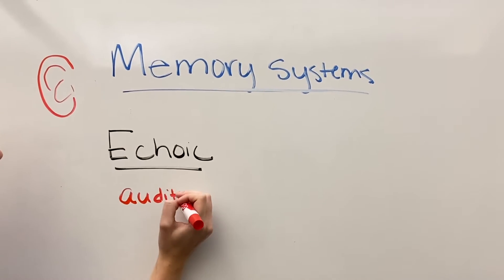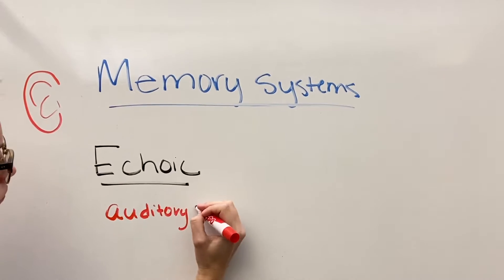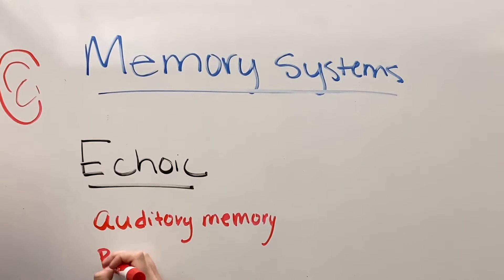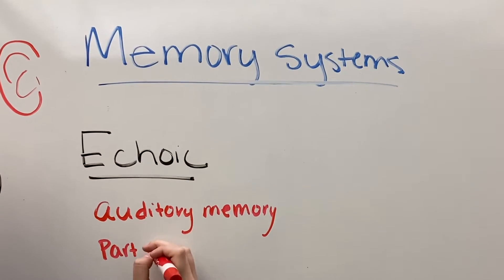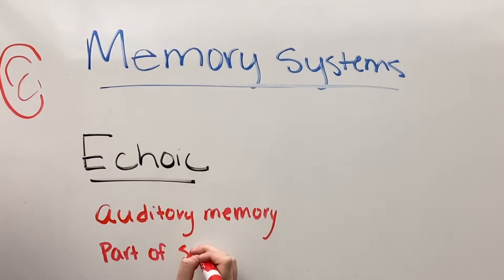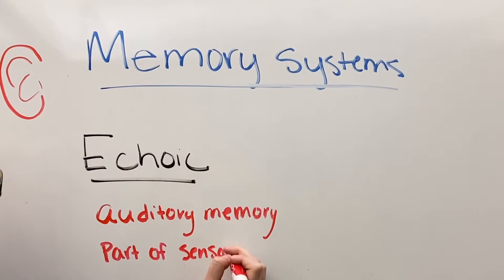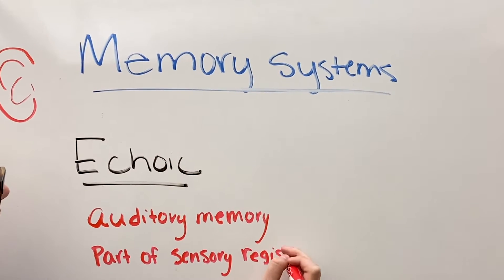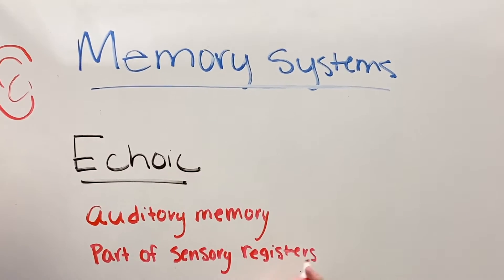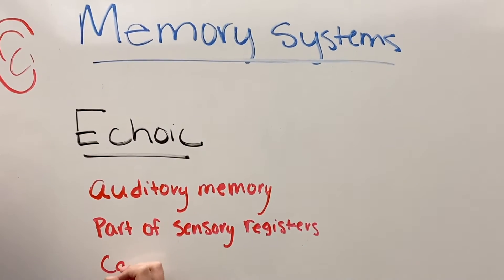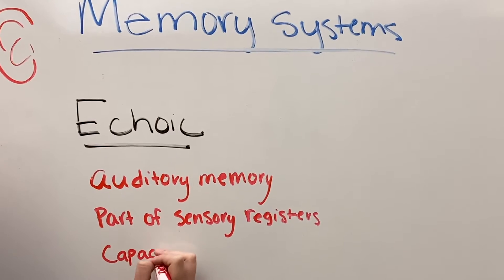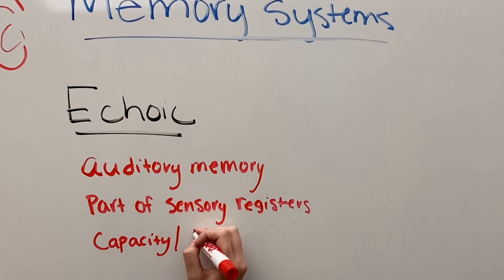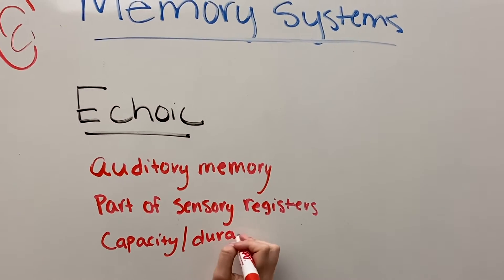Echoic is an auditory memory. It is part of our sensory registers, and also has a capacity and duration of three to four seconds.